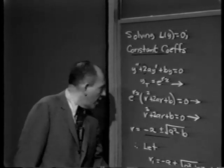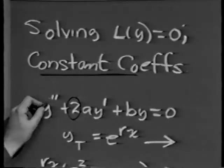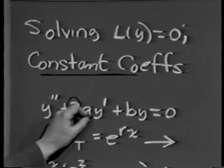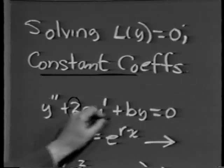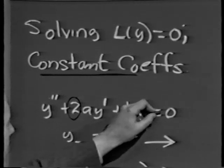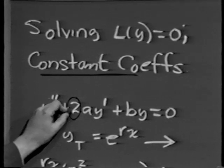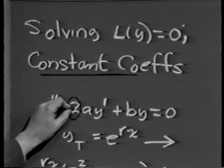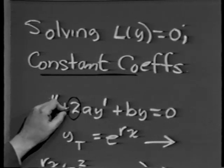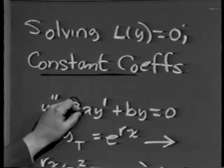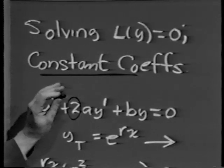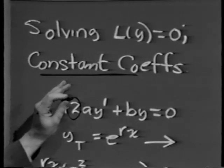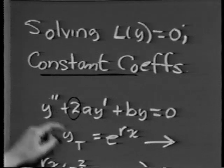In other words, we are going to deal with y double prime plus 2ay prime plus by equals 0, where a and b are constants. The only reason I put the 2 in here is to simplify some algebra later on. After all, if a is an arbitrary constant, so is 2a. We'll talk about that in more detail where I need it.